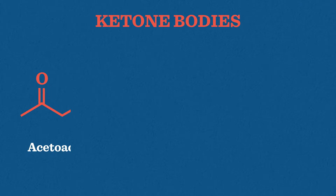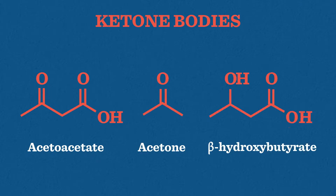There are three types of ketone bodies: acetoacetate, acetone, and beta-hydroxybutyrate. These molecules are commonly referred to as ketones, but chemistry enthusiasts might notice that only the first two are in fact true ketones, while beta-hydroxybutyrate is a carboxylic acid.